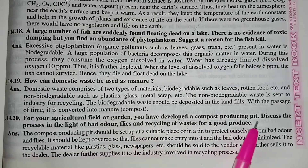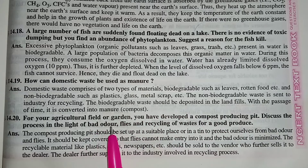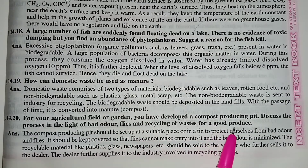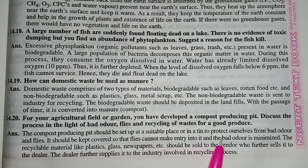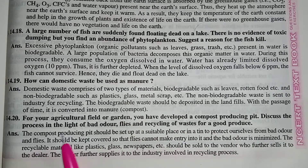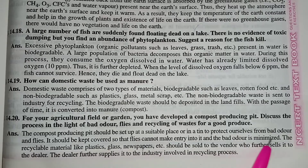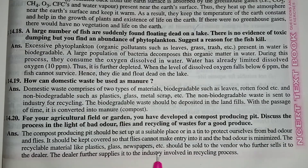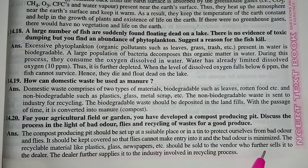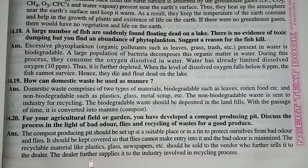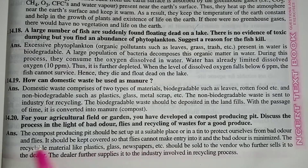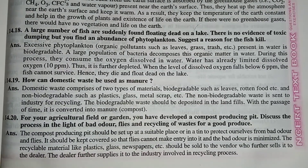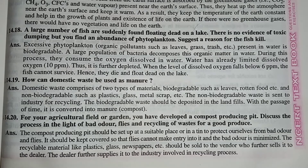Question: You have developed a compost producing pit. Discuss the process in light of bad odour, flies, and recycling of waste. For good produce, the compost pit should be set up at a suitable place or in a bin to protect from bad odour and flies — it should be kept covered so flies cannot enter and bad odour is minimized. Recyclable materials like plastic, glass, and newspaper should be sold to a vendor who sells to a dealer, who supplies it to the recycling industry. This completes the NCERT exercises for this chapter.